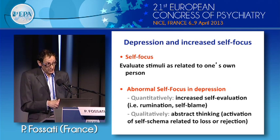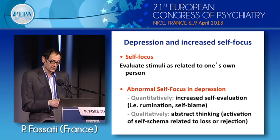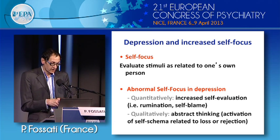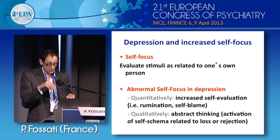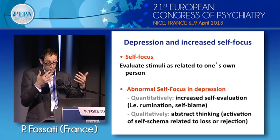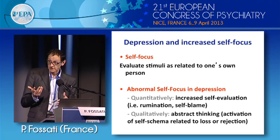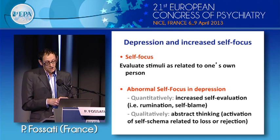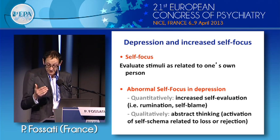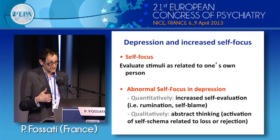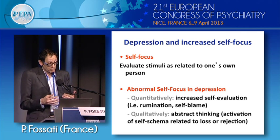Our research team has focused on and emphasized the importance of another emotional bias in depression: what we call increased self-focus. Self-focus is the fact that you evaluate stimuli — social, neutral, or emotional — and try to relate them to your own person. We found in depression that there is an abnormal self-focus, which is abnormal in terms of quantity. There is an increased tendency of depressed patients to self-evaluate, observable through symptoms of rumination, self-criticism, and self-blame. This abnormal self-focus is also abnormal in terms of quality.